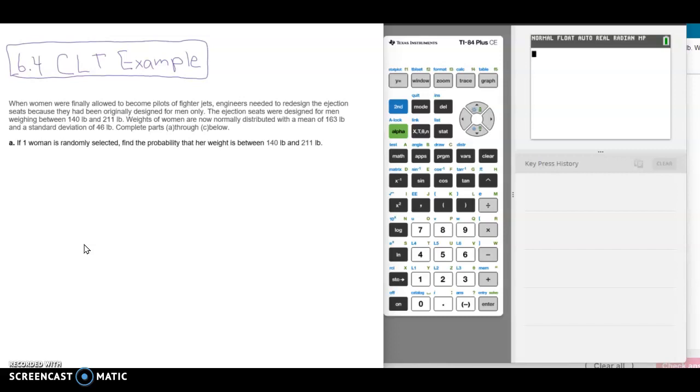It reads: When women were finally allowed to become pilots of fighter jets, engineers needed to redesign the ejection seats because they had been originally designed for men only. The ejection seats were designed for men weighing between 140 pounds and 211 pounds. Weights of women are now normally distributed with a mean of 163 pounds and a standard deviation of 46 pounds. Complete parts A through C below.